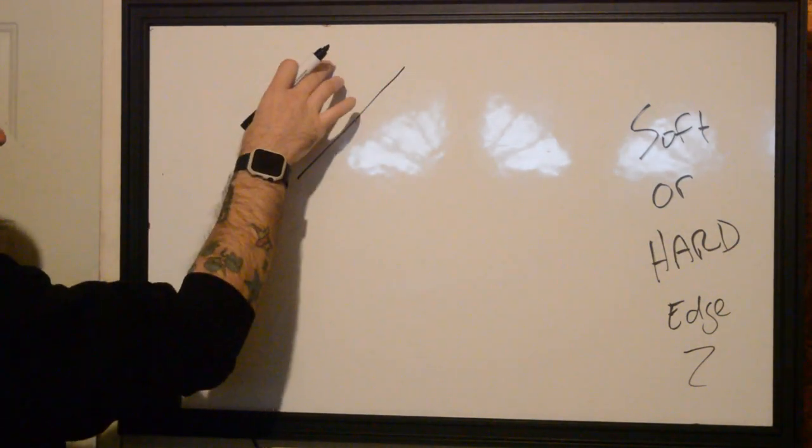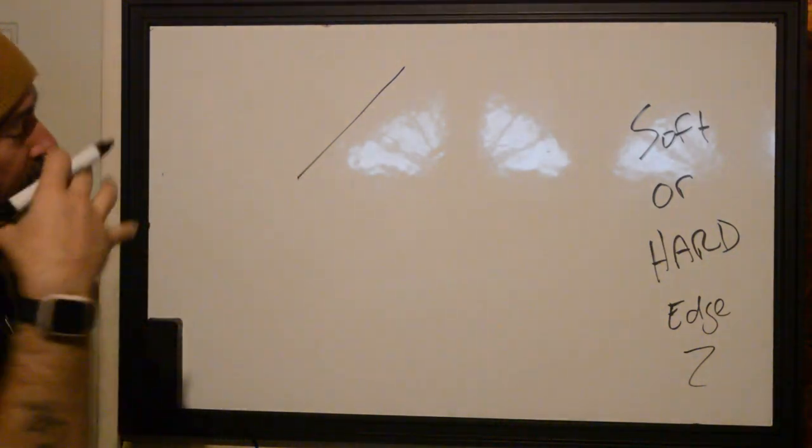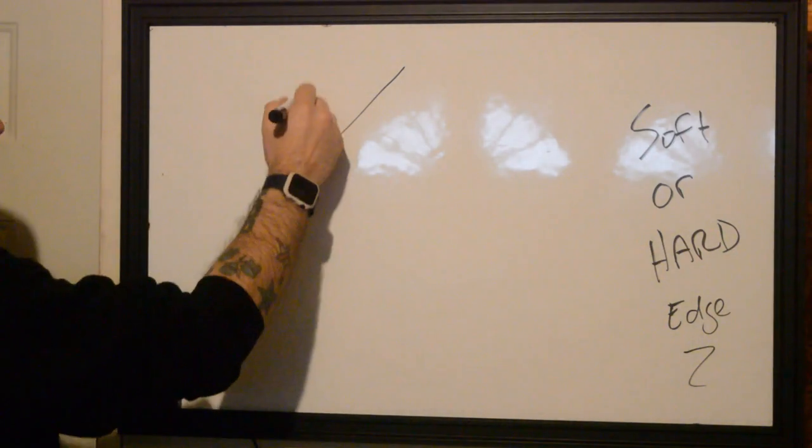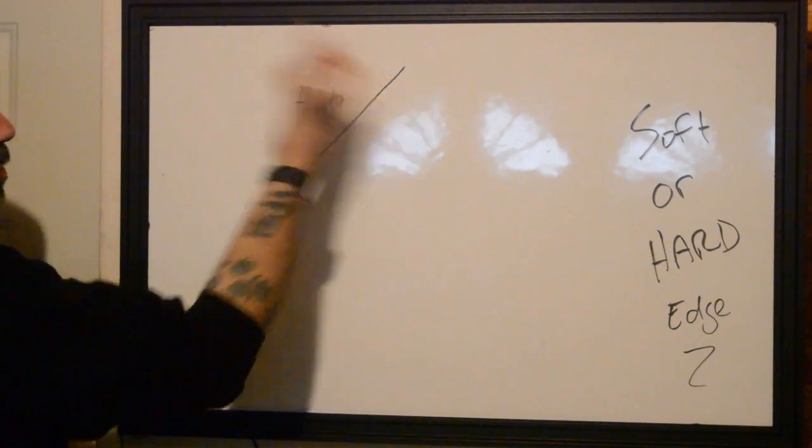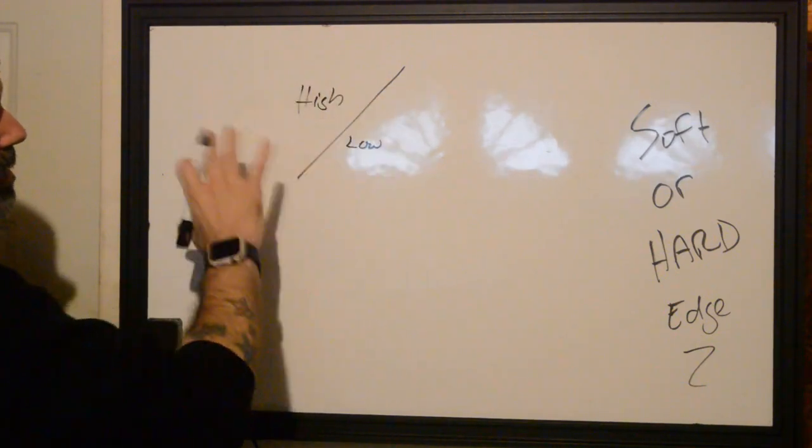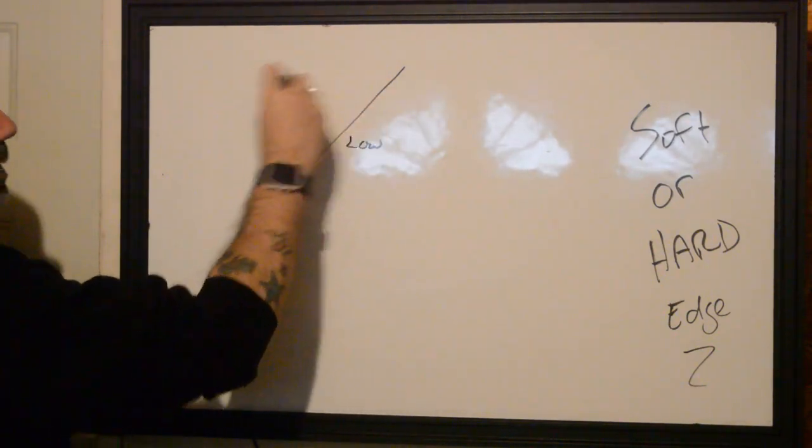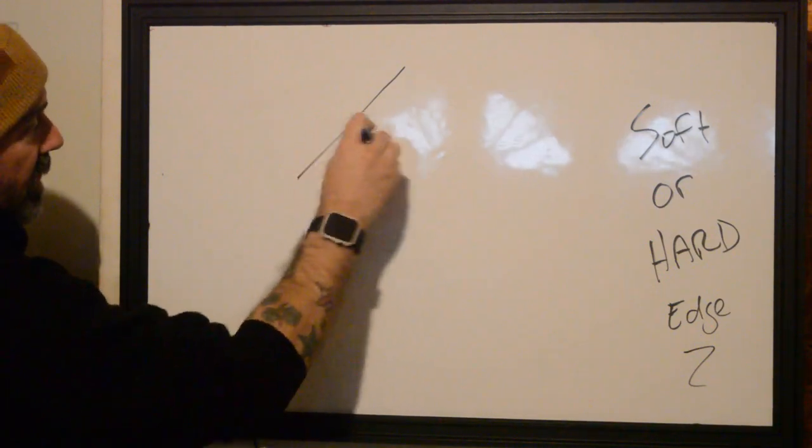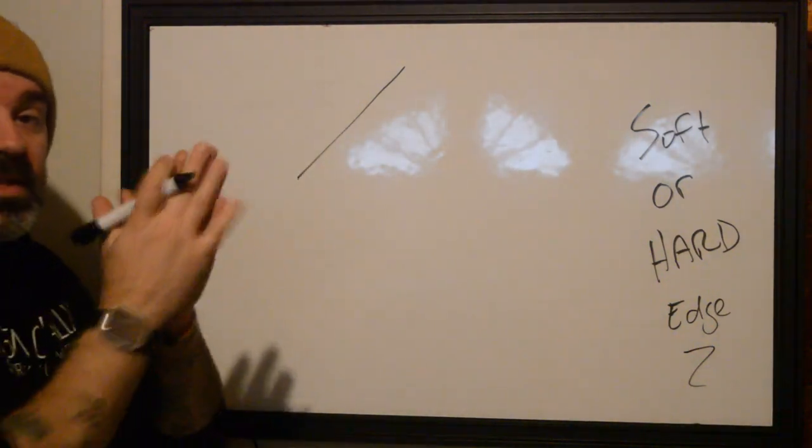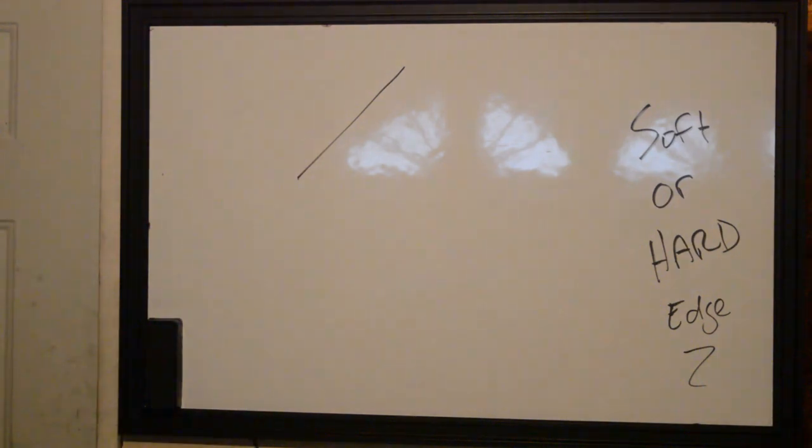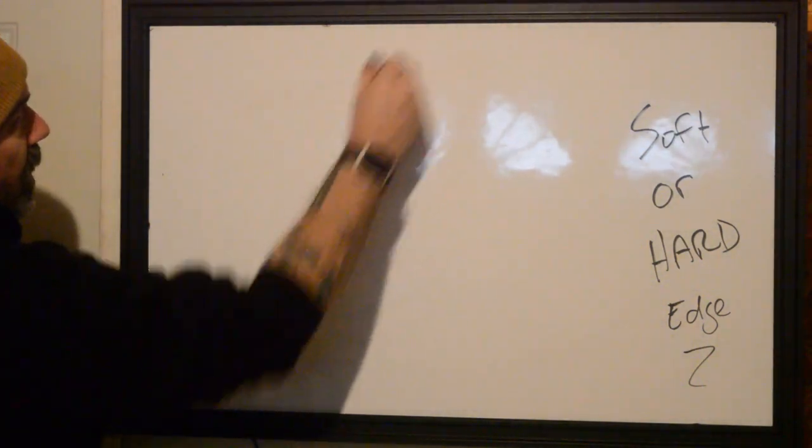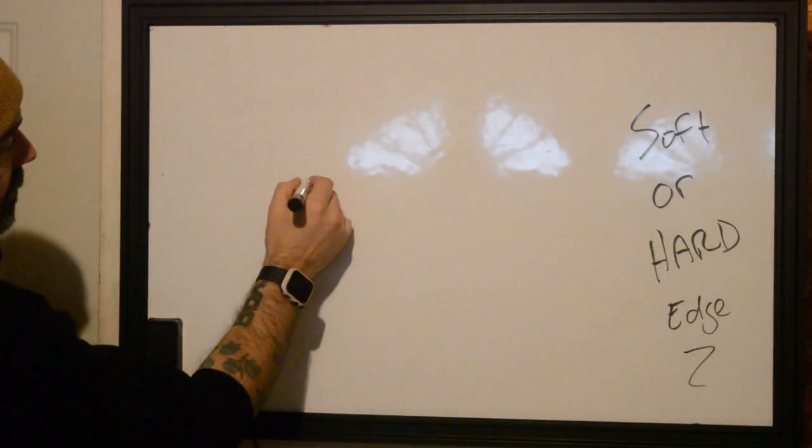There's a distinct separation between two areas. Now this can denote depth or it can even be just a change in value. This can be like high, it's more forward and this is low underneath, vice versa or whatever else. A hard edge is always going to define just a distinct separation between things.